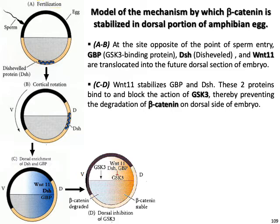Once translocated to the dorsal site, Wnt11 stabilizes the other two proteins — Dishevelled and GSK. Once stabilized, these proteins bind and block the action of GSK3, thereby preventing the degradation of beta-catenin on the dorsal side.